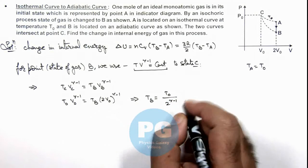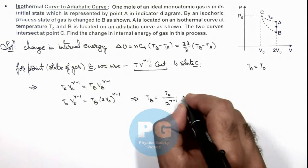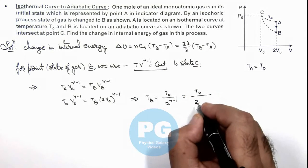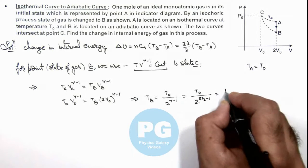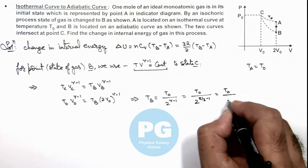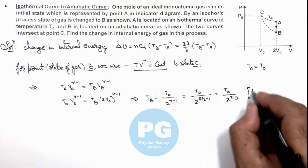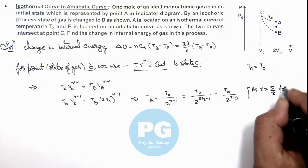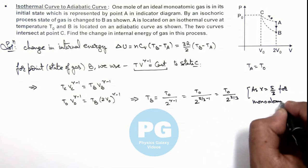And for a monoatomic gas, the value of gamma we already know is 5/3, so it can be written as T₀ by 2^(5/3 - 1), which is T₀ divided by 2^(2/3). Here we can write gamma equals 5/3 for monoatomic gas.